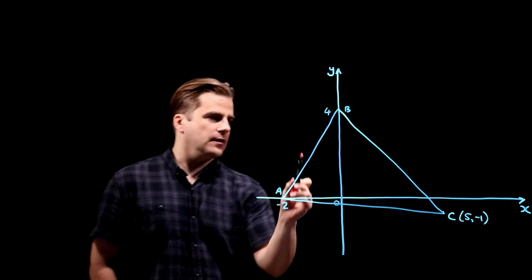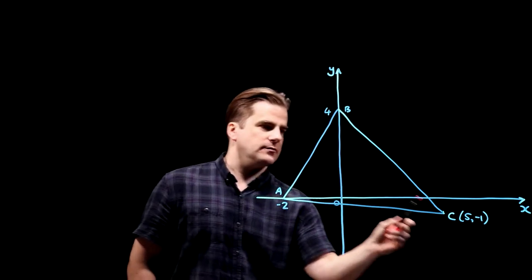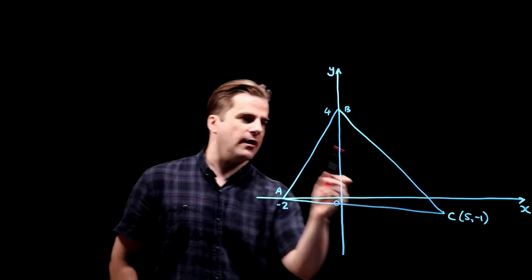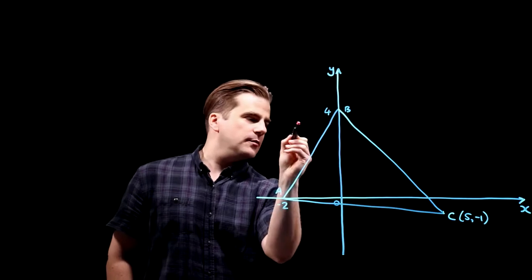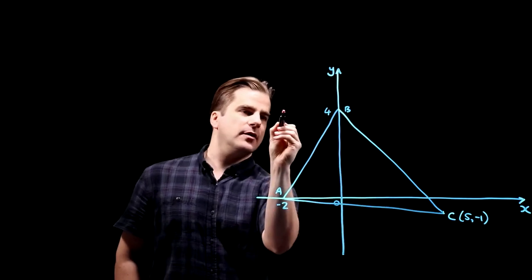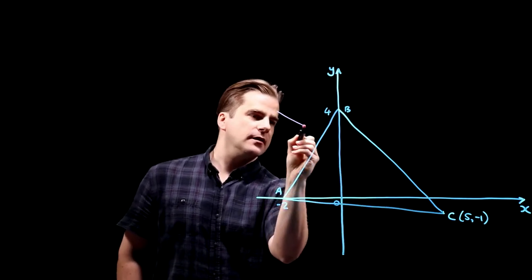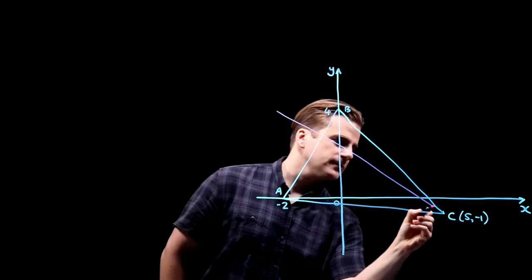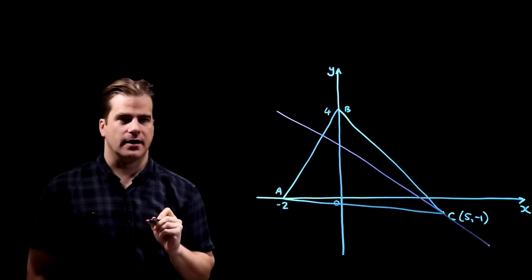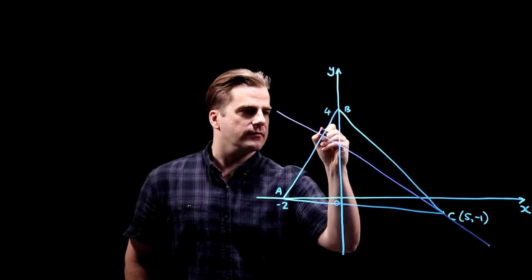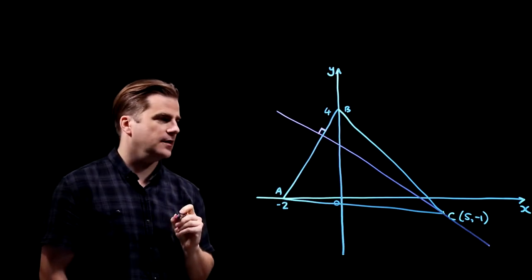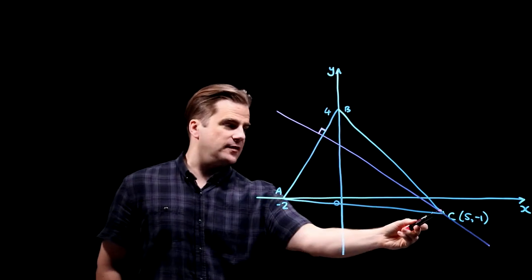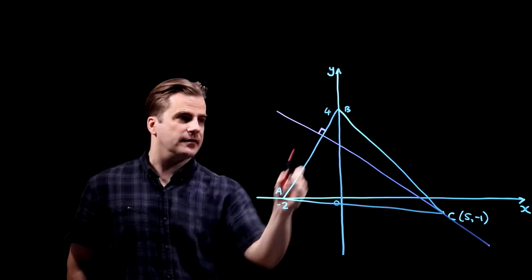So this line is going to be somewhere around this sort of region, through the point C and perpendicular to this. It's going to be roughly something like that, where that is perpendicular. That's the line that goes through the point C and is perpendicular to AB.